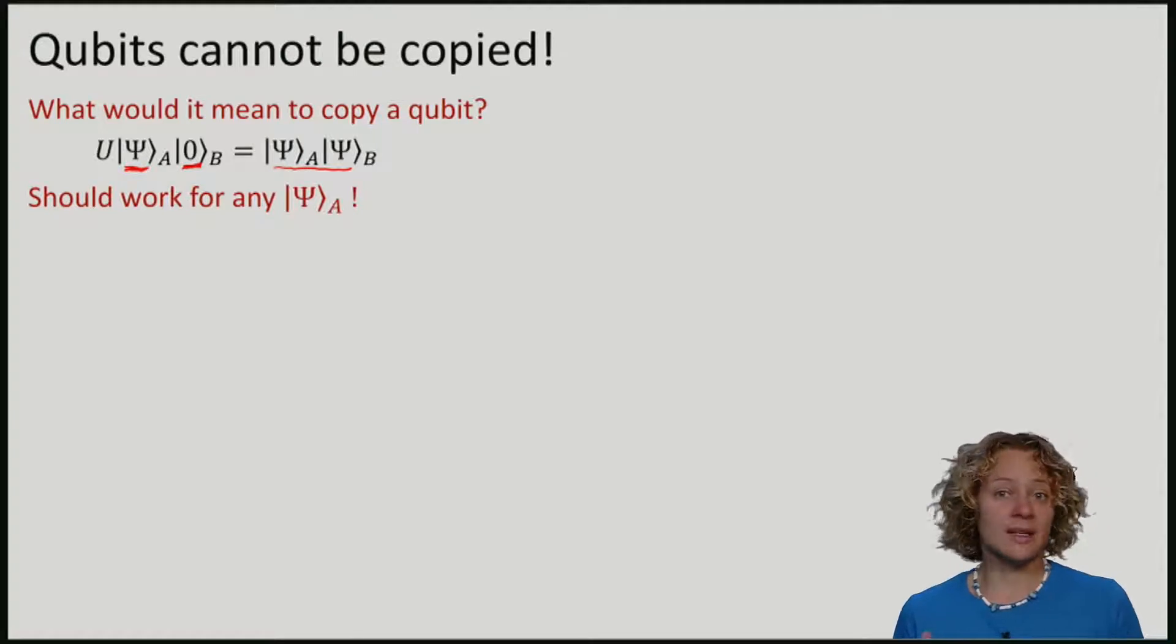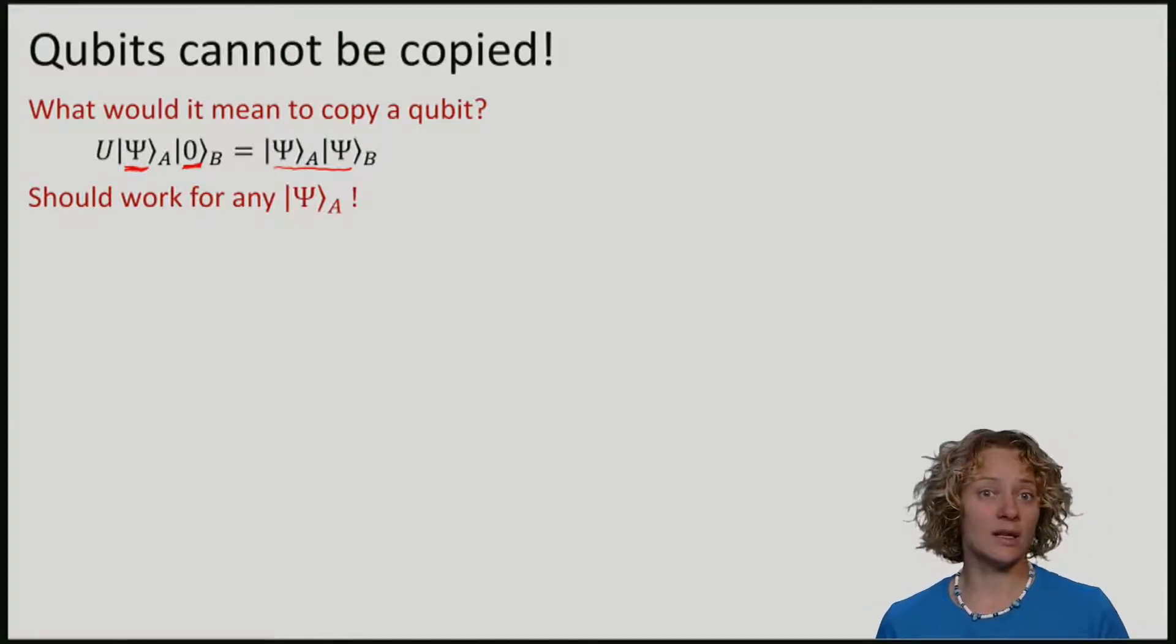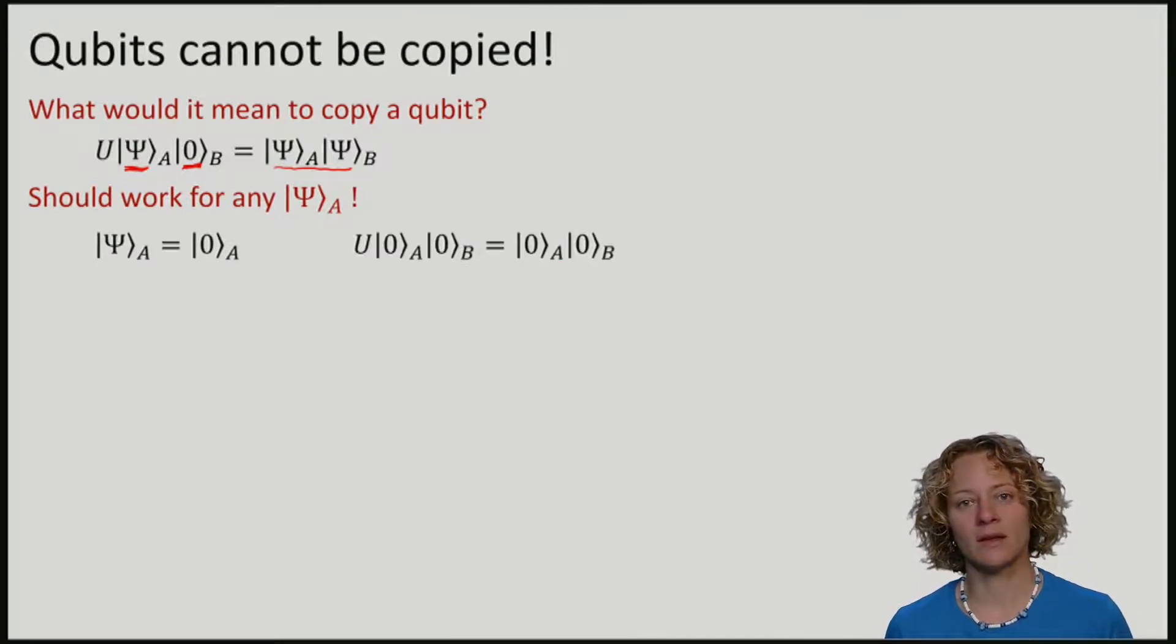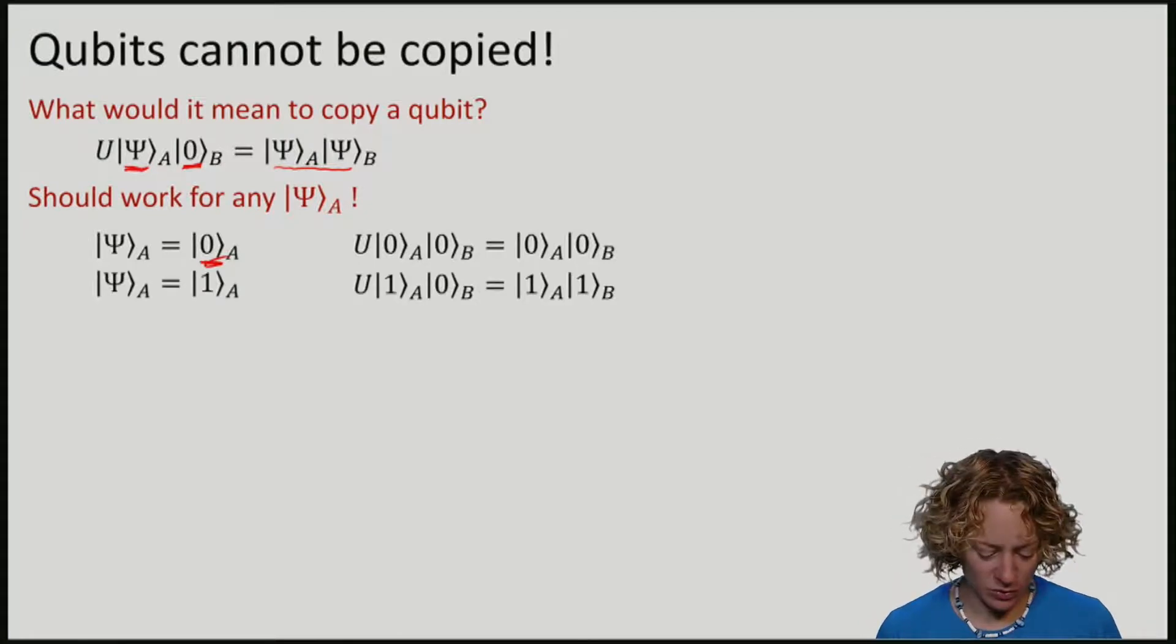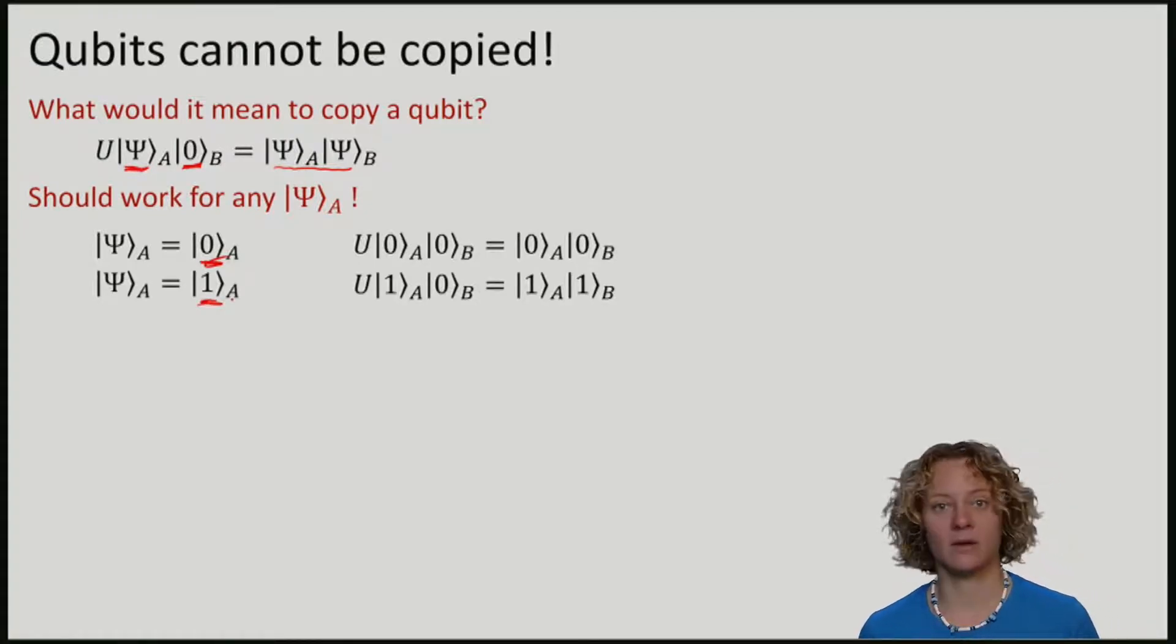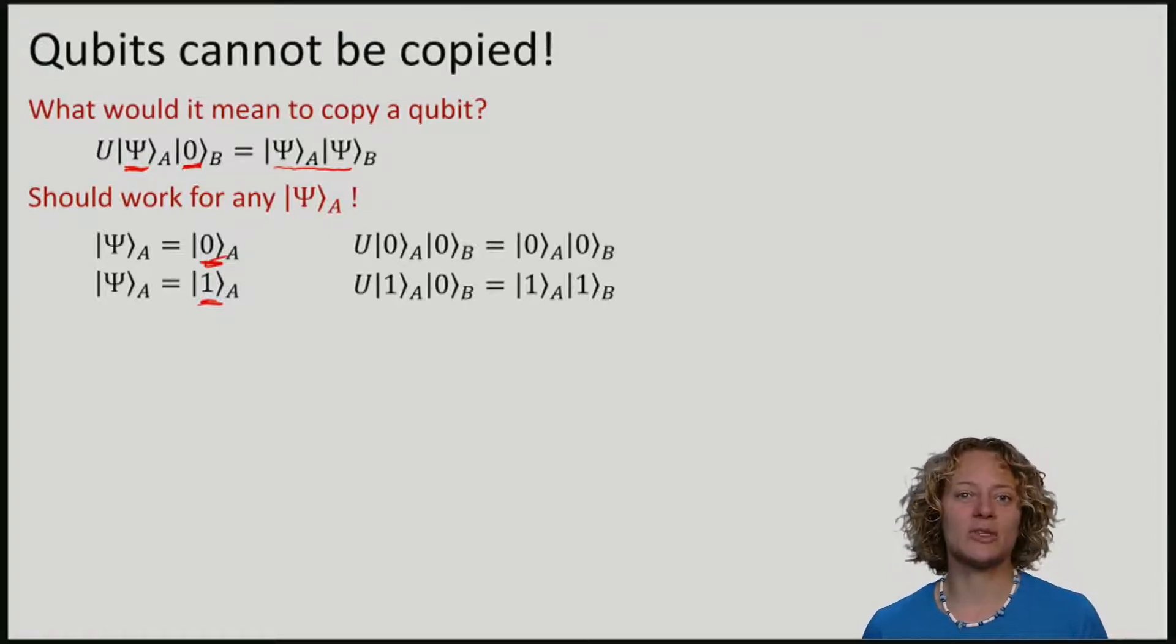U should work for any state |Ψ⟩ independently of what that state is. In particular, examples of qubits we would like to copy are the elements of the standard basis. We should be able to copy |0⟩ and |1⟩. We know that classical bits can be copied, so certainly there is no surprise that we should be able to find such a copy operation U.